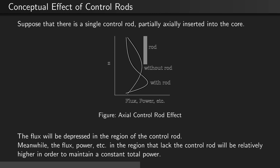Meanwhile, the flux, power, and related quantities will be higher in the region below where the control rod is inserted. This is in order to maintain a constant total power.